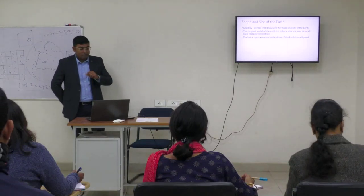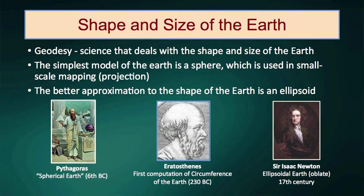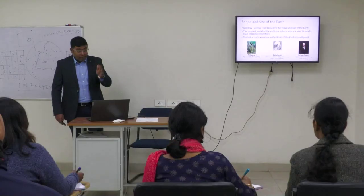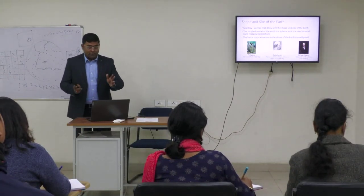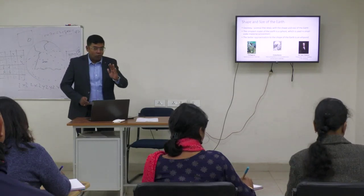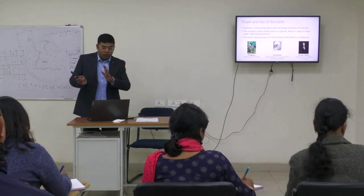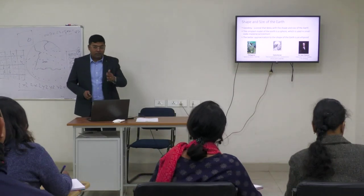The better approximation is that the Earth is not a perfect sphere, but an ellipsoidal shape where we have polar flattening and equatorial bulging. The ellipsoidal idea of the Earth was given by Isaac Newton in the 17th century. He was the first to say that this ellipsoid is an oblate ellipsoid — oblate meaning north and south flattening and east and west bulging.